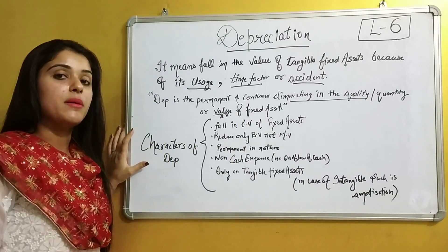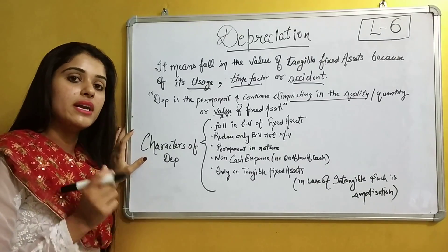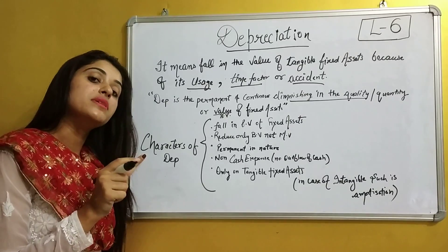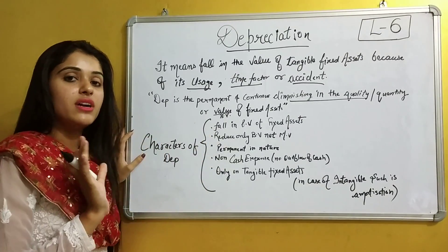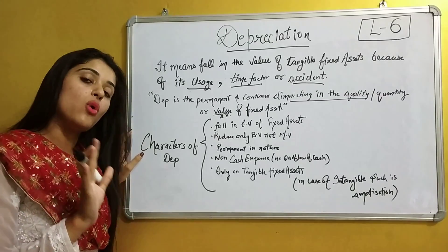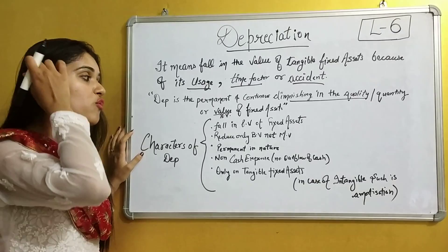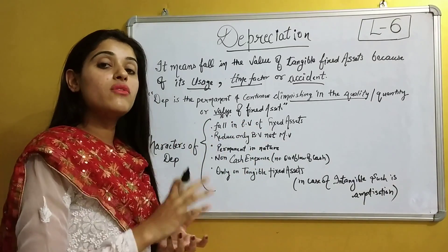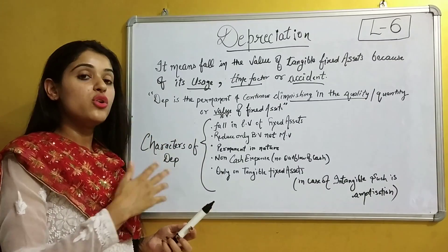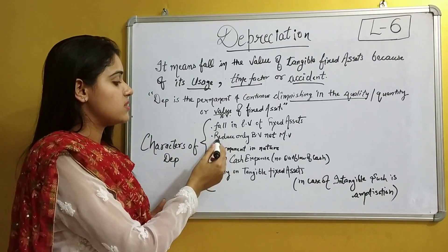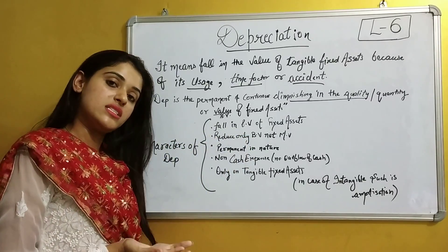Next are the characteristics of depreciation. When we are going to identify whether a reduction is due to depreciation, these five points must be contained in that amount for us to call it depreciation on a fixed asset. First of all, fall in the book value of the fixed asset — only the book value of the fixed asset is reduced by charging depreciation, not the market value.